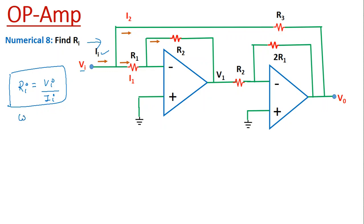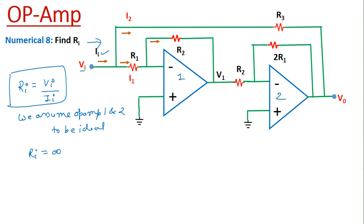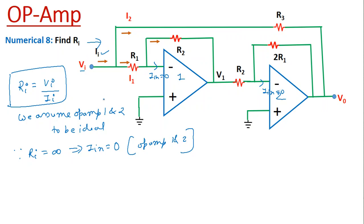We assume this is operational amplifier 1 and this is operational amplifier 2. We assume both op-amp 1 and op-amp 2 to be ideal. In the ideal operational amplifier, the input resistance is infinite. Since input resistance is infinite, the input current flowing into op-amp 1 and 2 will be equal to zero. So Iin will be equal to zero for both — don't confuse the two current representations Ii and Iin.